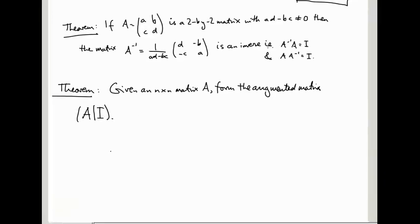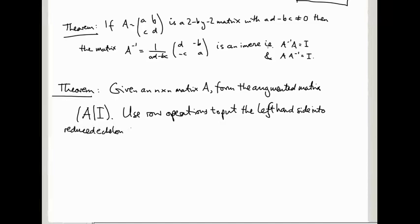So I'll do an example shortly, but let me finish the statement of the theorem. You apply the row operations to the whole thing, the whole augmented matrix, but you're just putting the left hand side into reduced echelon form.